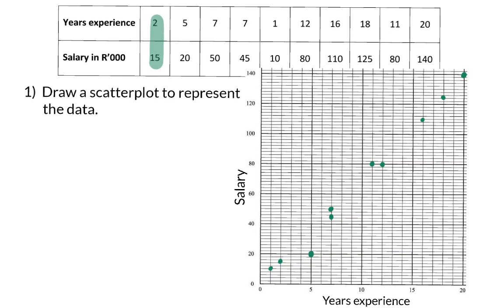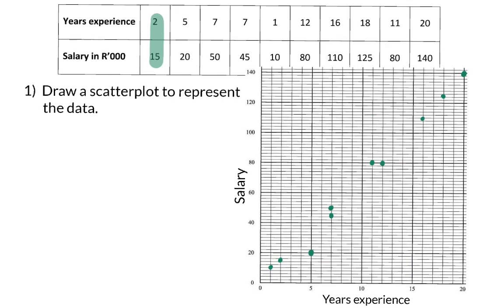From the scatter plot, we can now see that the years experience and salary for this company form a linear trend. In grade 11, you would have simply drawn the line of best fit to represent this relationship.